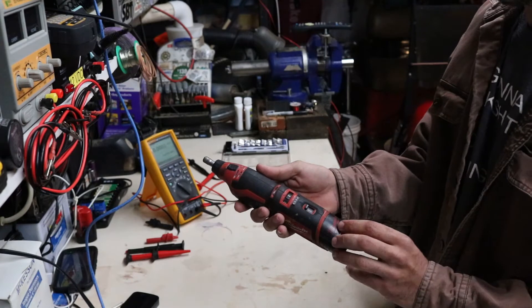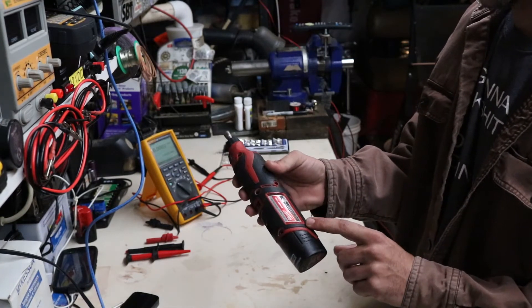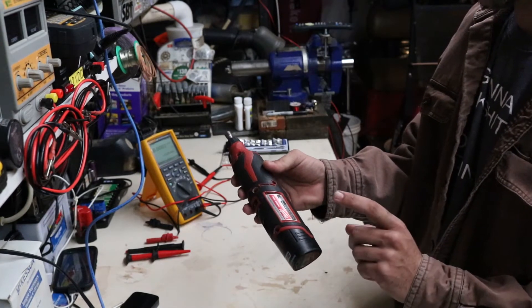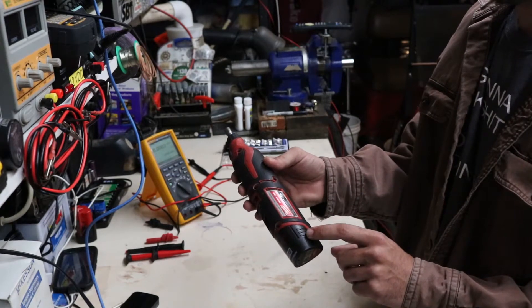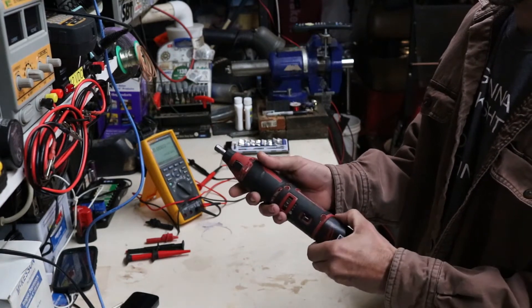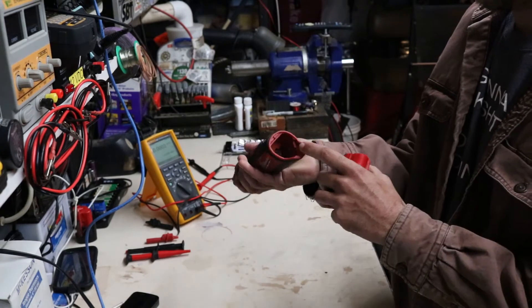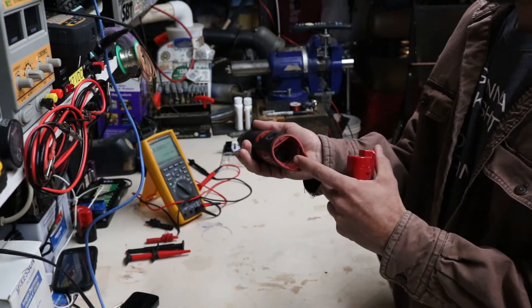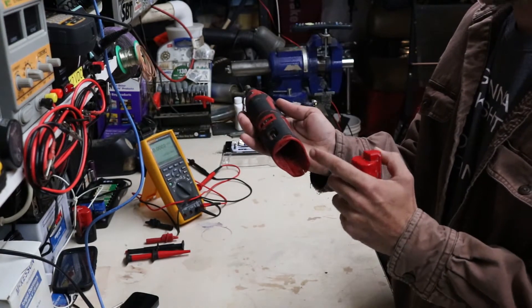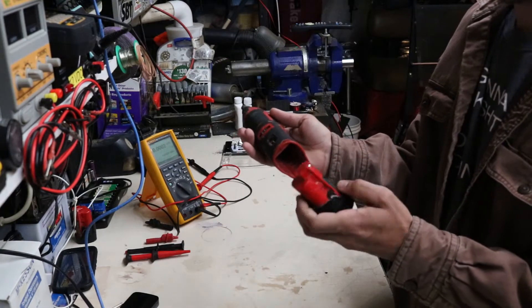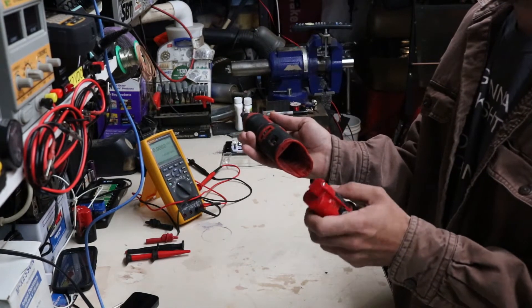Initially I thought this was a temperature problem. Some of these M12 and the fuel tools, if the temperature detection pin in the tool and in the battery, if either one of them become corroded, the tool will not run because it can't determine the temperature of the battery pack.